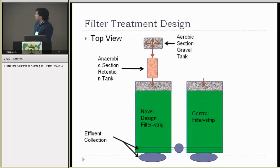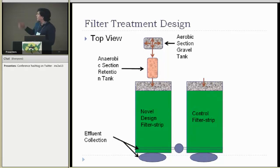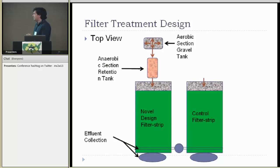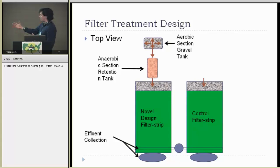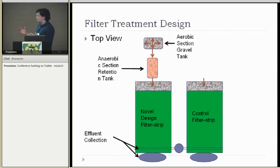Here's a schematic of my experimental design. The pre-treatment design is on your left. I have an aerobic tank where the runoff would be applied. It would then flow by gravity into an anaerobic section retention tank and then flow by gravity into a rock check and be dispersed over a filter strip. For the control, it would just be dispersed into the filter strip. Effluent — both subsurface and surface — was collected so I could make a mass balance and see the load reduction.